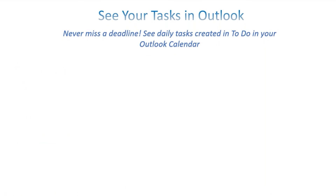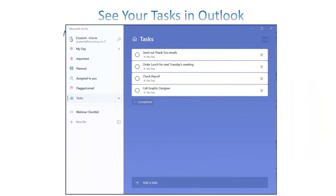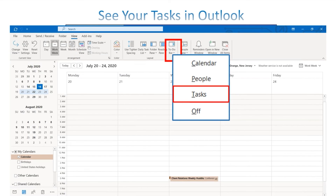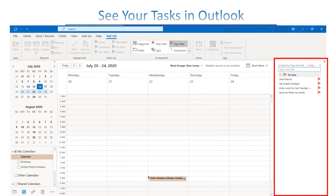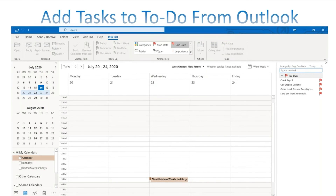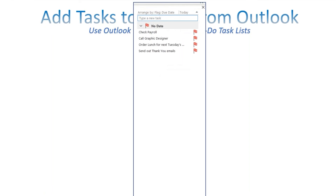Now, how do you actually see your tasks in Outlook? This is another two-way sync integration with Microsoft To Do. In To Do, you can see your tasks — let's say you have four tasks there. To see them in Outlook, go to View, click the To Do Bar button, select Tasks from the drop-down menu, and you'll get a task bar on the side showing all your To Do tasks right within Outlook.